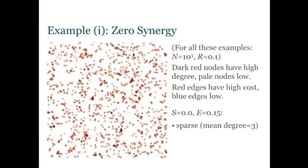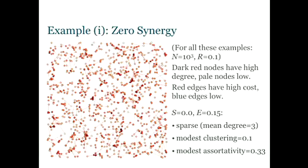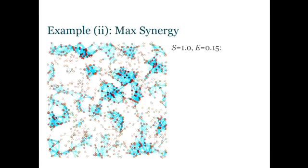It's got a mean degree of 3, which is obviously a lot lower than the equivalent random geometric graph. It's got some clustering, but not very much. And it's got some positive assortativity because some nodes are lucky. They're born in a dense patch. So there's lots of people that they can be connected to, and they tend to be connected to each other.